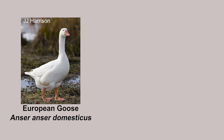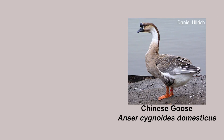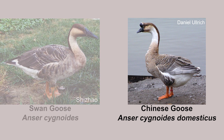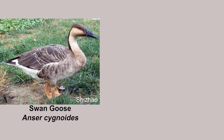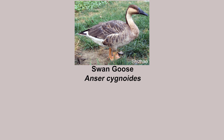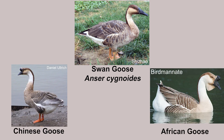The European goose was domesticated from the greylag goose around 7,500 years ago, while the Chinese goose was domesticated from the swan goose around 3,500 years ago. Technically, the swan goose was domesticated into two different breeds: the Chinese goose and the African goose.